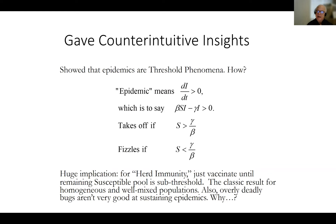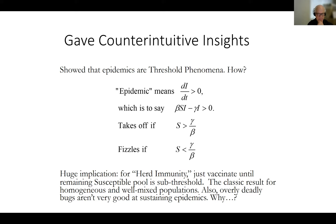The model gave several wonderful insights. It showed for the first time that epidemics are threshold phenomena. When you say there's an epidemic, you mean the infected pool is growing — dI/dt is positive — but dI/dt is beta*S*I minus gamma*S*I, so that must be positive. The thing takes off when susceptibles exceed the removal rate over the transmission rate, and fizzles otherwise. This has immense implications for herd immunity: vaccinate until the remaining susceptible pool is sub-threshold. This is the classic result for homogeneous, well-mixed populations.